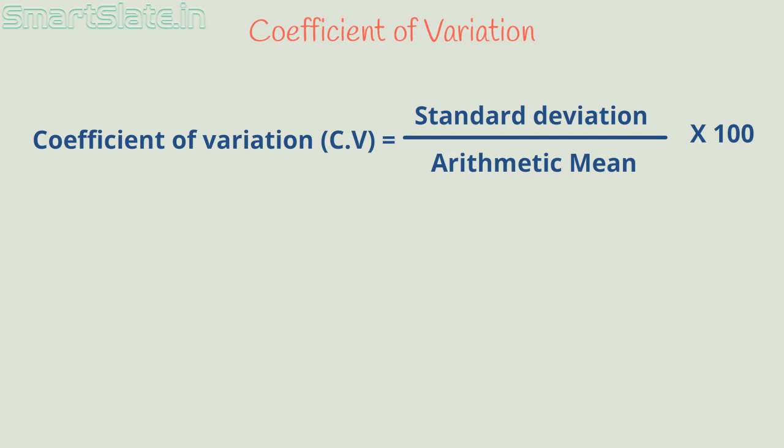Standard deviation is sigma. Arithmetic mean is x bar. CV is equal to sigma by x bar into 100.